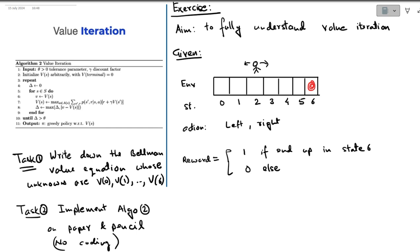We have this value iteration on the left side. The task for you is to apply this for a very simple agent environment. Let me explain this environment. The purpose of this exercise is to repeat these steps on this simple environment so that you will fully understand value iteration. The environment is a very simple one. We have this simple linear grid with 1, 2, 3, 4, 5, 6, 7 states possible.